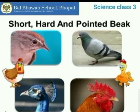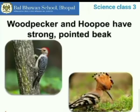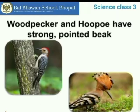Children, a woodpecker and hoopoe have strong pointed beaks. This is to bore holes into hard tree trunks and pull out insects from the holes to eat.